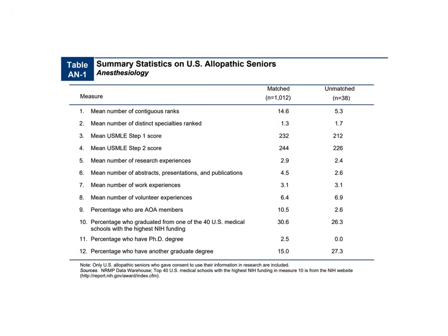Percentage who are AOA is 10.5%, which makes perfect sense. Percentage who graduated from a top 40 US medical school based on NIH funding: 30.6% — so almost one-third of US seniors who matched into anesthesiology went to a top 40 medical school. This underscores how important it is to go to the best medical school you can. Percentage with a PhD degree is only 2.5%, and percentage with another graduate degree is 15%, so anesthesiology does have some MD-PhDs but it's not dominant.